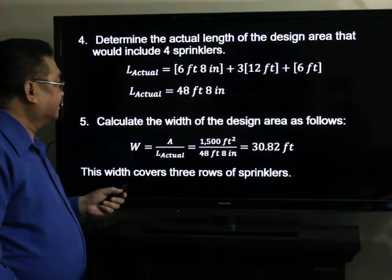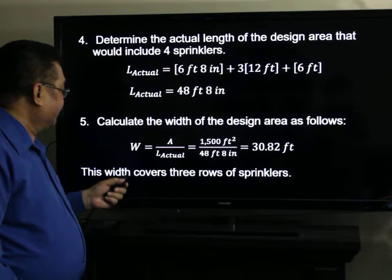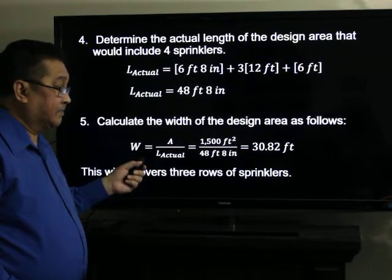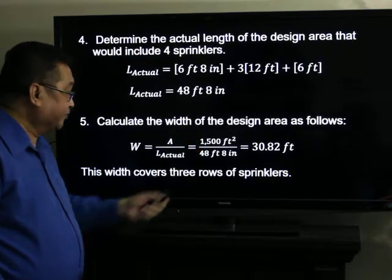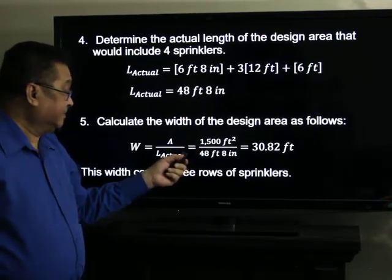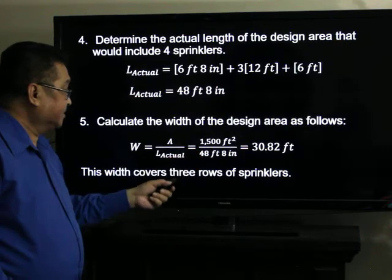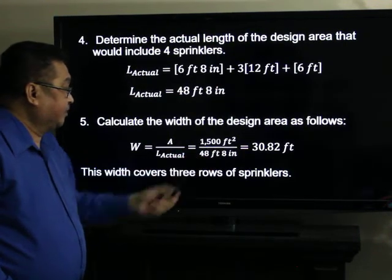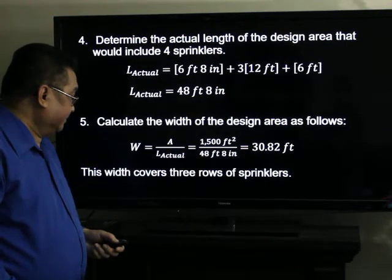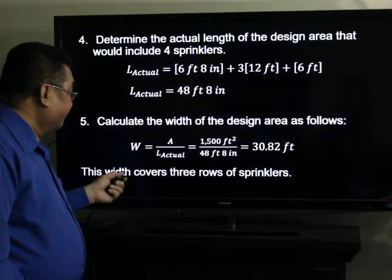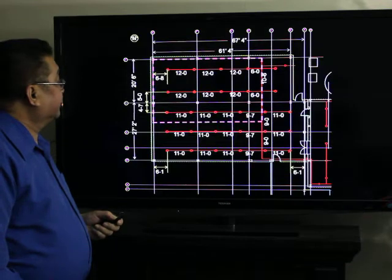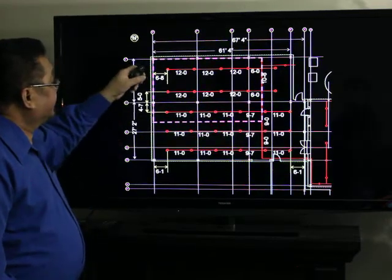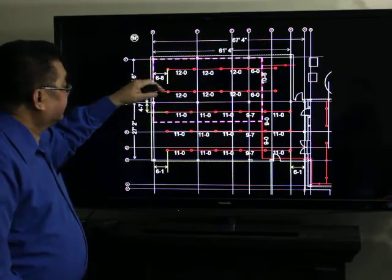Calculate the width of the design area as follows. Width is equal to A divided by L subactual. We will have 1,500 square foot divided by 48 feet 8 inches, so the result will be 30.82 feet. The width covers 3 rows of sprinklers: row 1, row 2, and row 3.